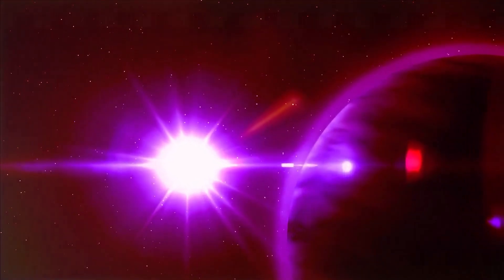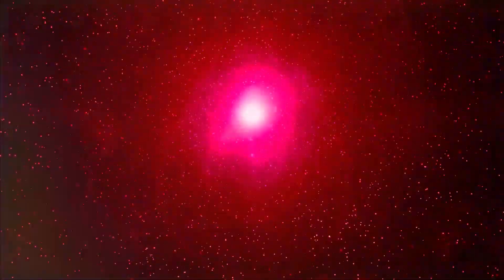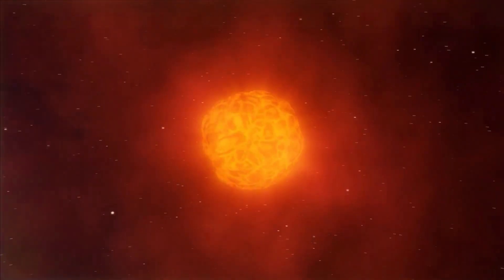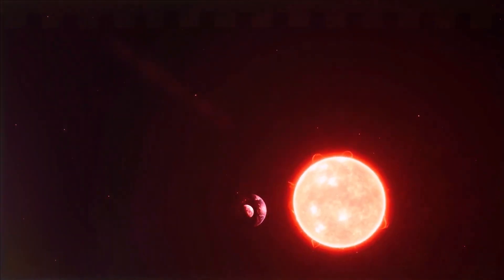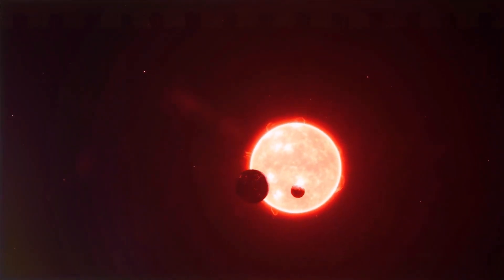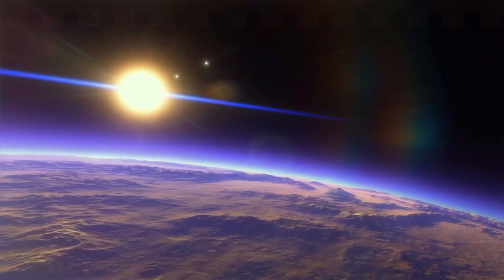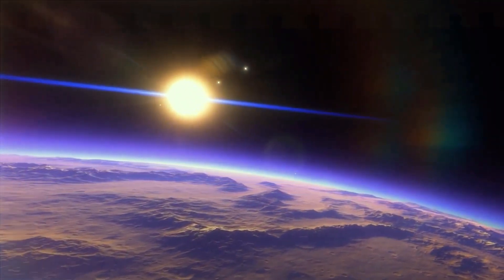There are several other stars that have been compared to Betelgeuse in terms of their potential to explode as supernovae. These stars are known as red supergiants, and they are the largest and brightest stars in the universe. One example is Antares, which is located in the constellation Scorpius. Antares is a slightly smaller and cooler star than Betelgeuse, but it is still very massive and is expected to explode as a supernova within the next few thousand years.